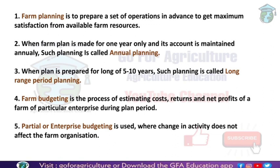Farm planning has two types: annual planning and long range planning. Annual planning, as we can easily understand, means planning made for one year. When the farm plan is made for one year only and its account is maintained annually, every year the planning will be different and the account also will be different because expenses are different. This is called annual planning.